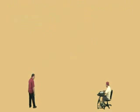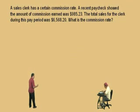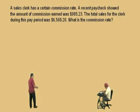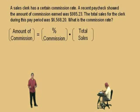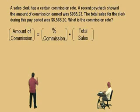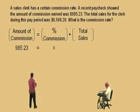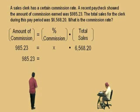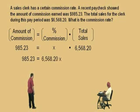Let's do another one. A sales clerk has a certain commission rate. A recent paycheck showed the amount of commission earned was $985.23. Total sales for the clerk during this pay period is $6,568.20. What is the commission rate? Here we're looking for the commission rate — so we're looking for the percentage. There is our format. We're looking for the commission rate. What's the amount of commission, Charlie? $985.23. And since we're looking for the percent commission, that's our x. What was our total sales? $6,568.20. So $985.23 is equal to $6,568.20x.